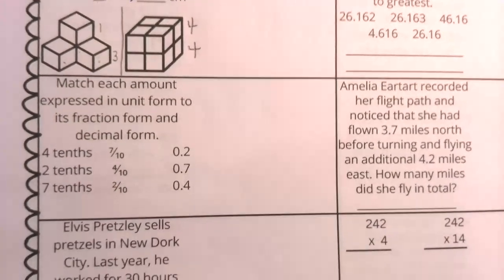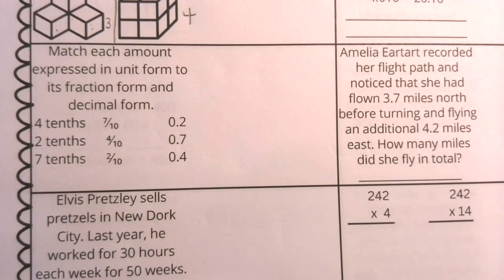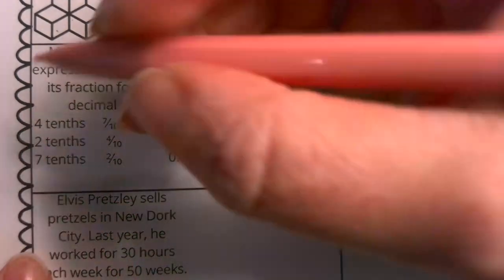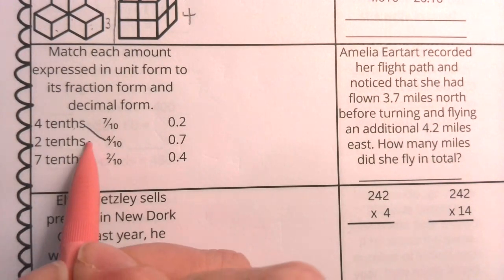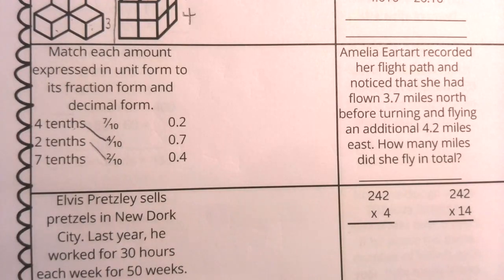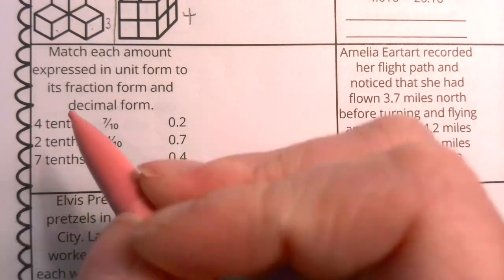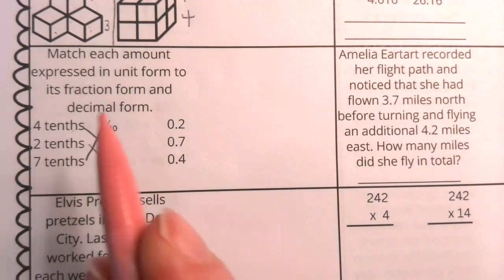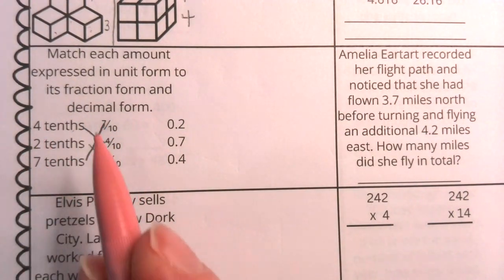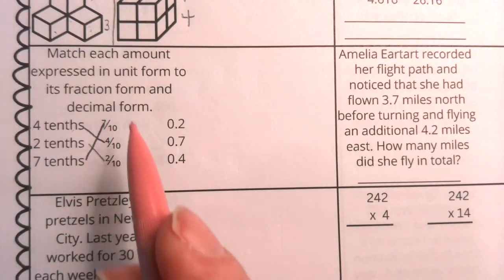Okay, let's go back and take a look here at matching unit form to fraction form to decimal form. We're going back to our fourth grade standards here. Well, four tenths is the same thing as four tenths. Two tenths is the same thing as two over ten, and seven tenths is the same thing as seven over ten. So this is how it should look to connect my unit form to my fraction form.